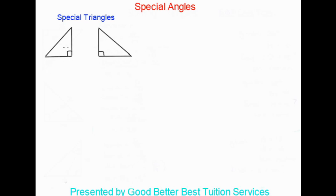The first triangle — both of them are right angle triangles. The first has 45 degrees, 45 degrees, and 90 degrees, with sides of one, one, and root two. The second triangle has 60 degrees, 90 degrees, and 30 degrees, with sides of one, root three, and two.